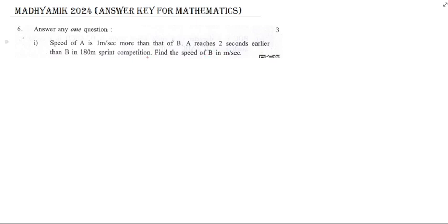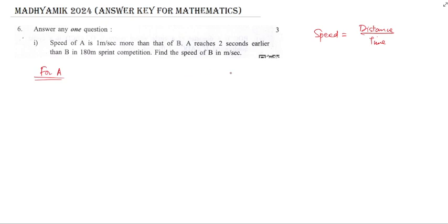We need a formula from physical science: speed is distance divided by time. I am going to use this formula in this problem. Let the speed of B be x meter per second.